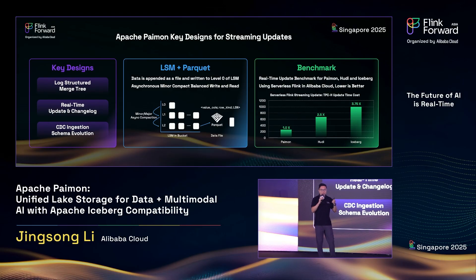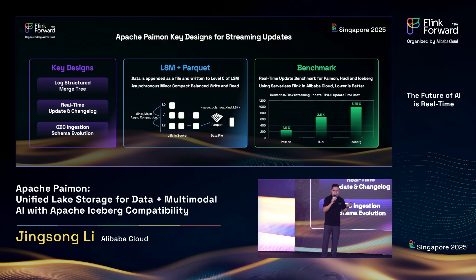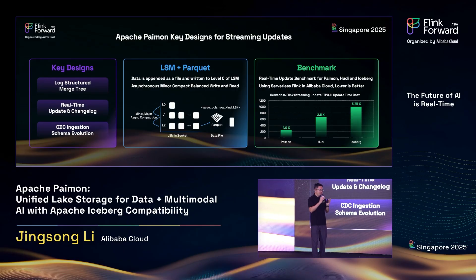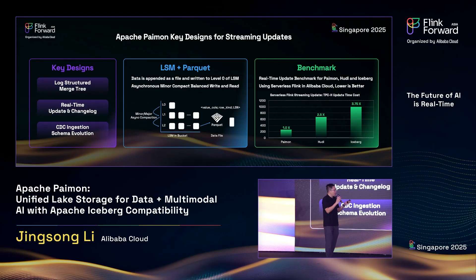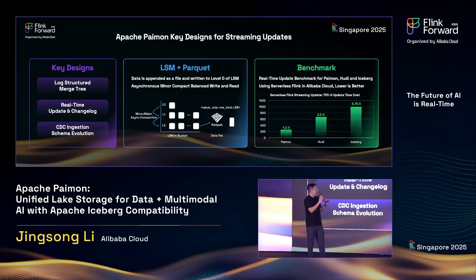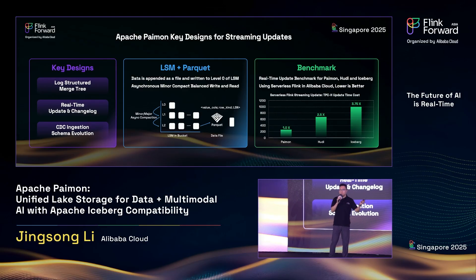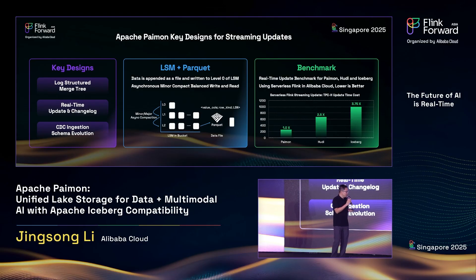With LSM structure, Payment can do async minor compaction to balance the write and read. Not just like Iceberg or Delta — if they want to do batch update or batch merging, the table will merge all data. But for Payment with LSM, we can do minor compaction to balance write performance and read performance. We have done a real-time update benchmark for Payment, Hoodie, and Iceberg using serverless Flink on Alibaba Cloud. The result shows lower is better, and Payment has very good update performance.